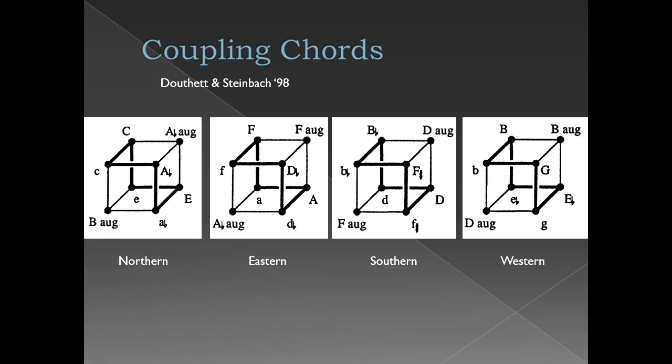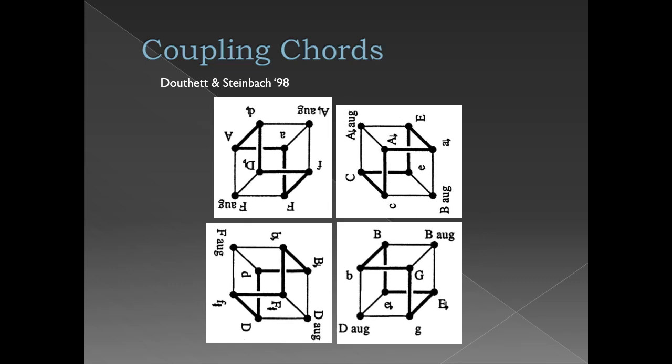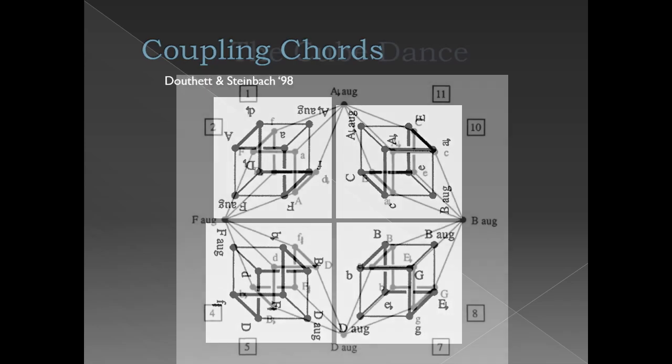The hexatonic cycles are shown in bold. Note that one can transform one augmented triad into the other via three parsimonious semitonal movements, and that each individual augmented triad exists within precisely two hexatonic cycles. With this in mind, we can view the augmented triads as coupling chords which link the hexatonic cycles to one another. This arrangement results in Douthit and Steinbach's famous cube dance.